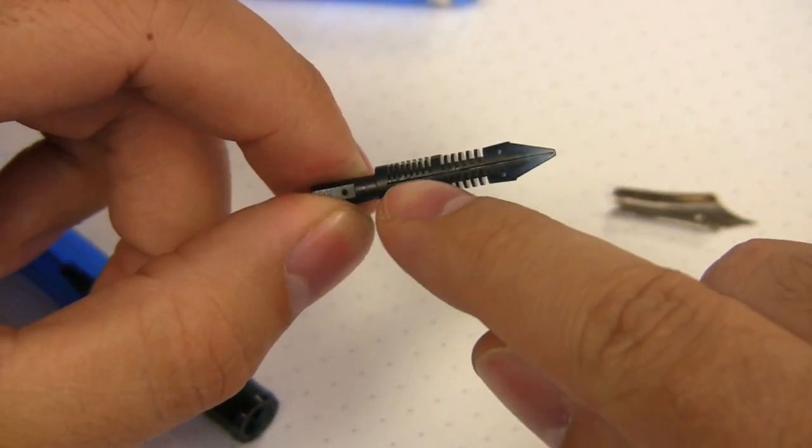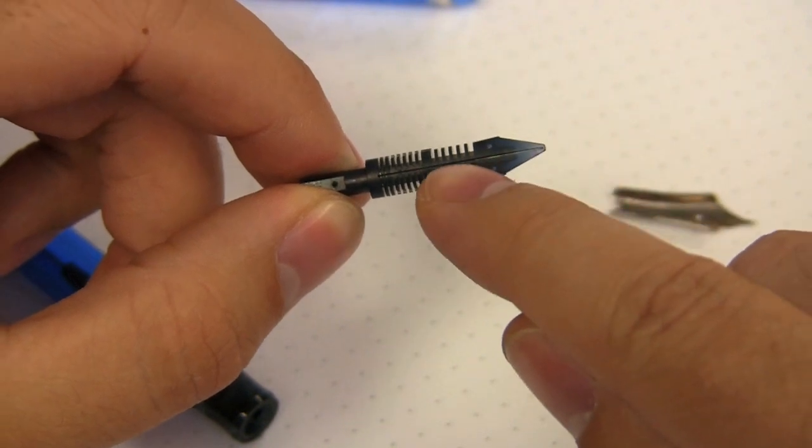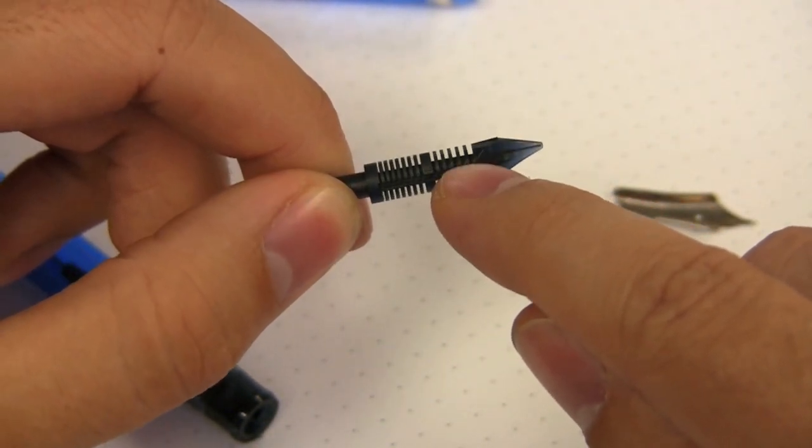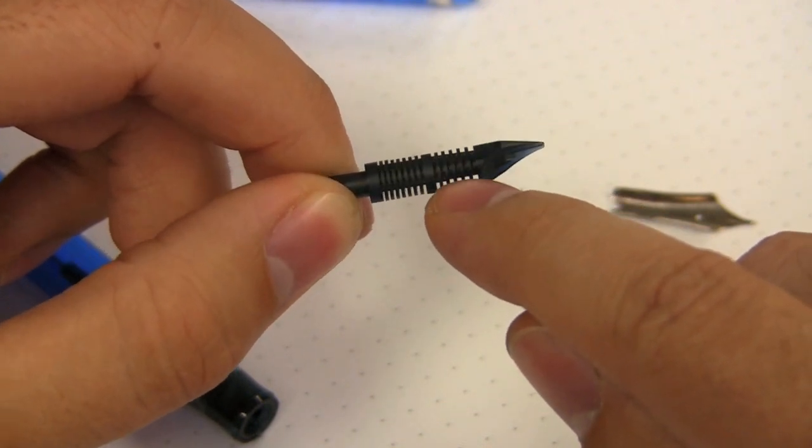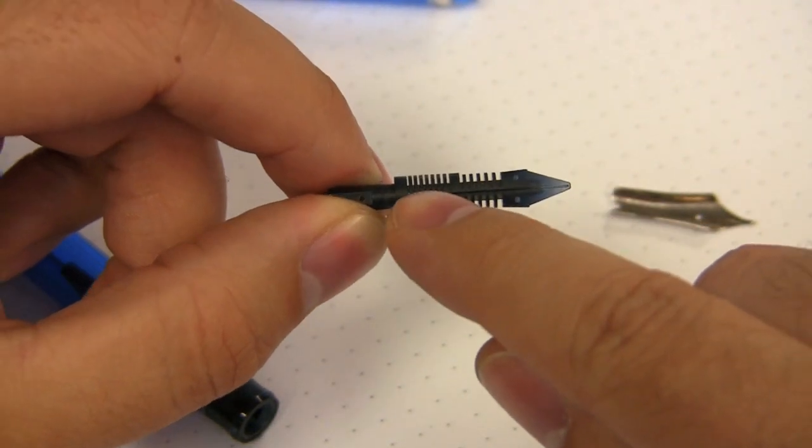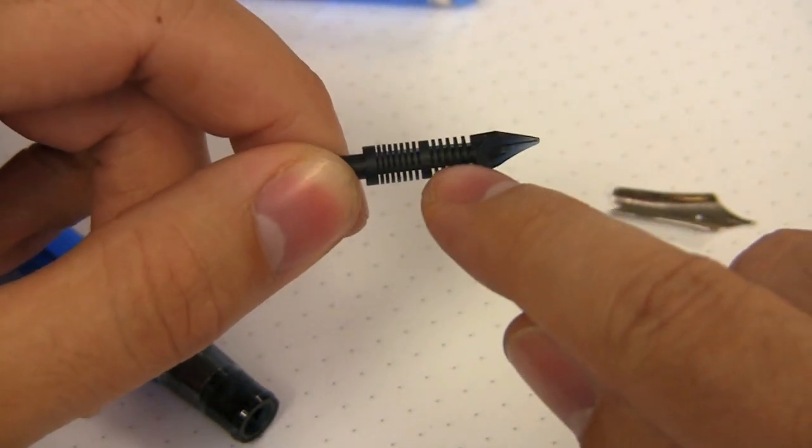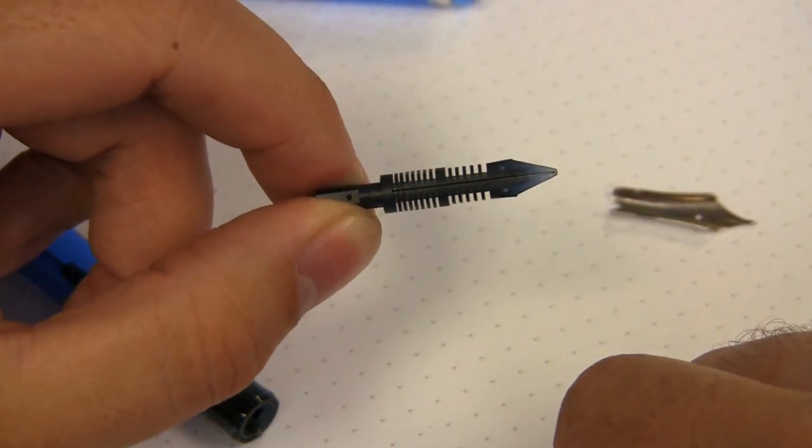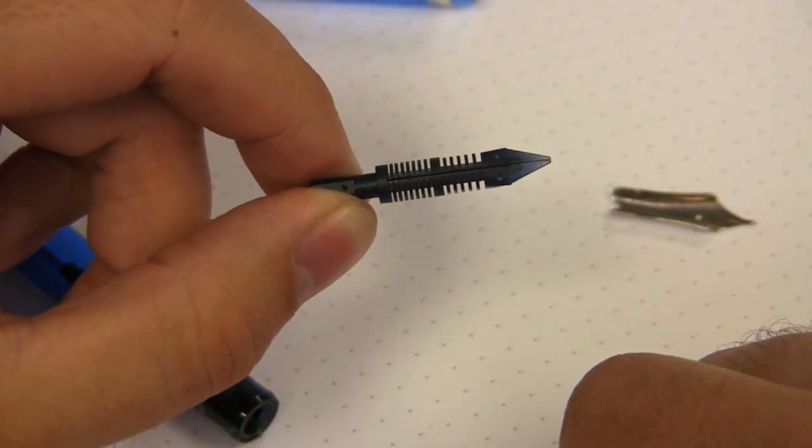And since this is such a very small slit cut here in the feed channel, these fins will hold extra ink so that when you're writing faster or with more ink demand than this little feed channel can provide, it pulls the ink from here and allows you to still have a continuous flow no matter how fast you're writing.